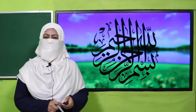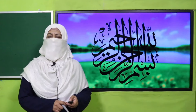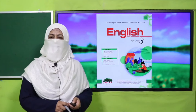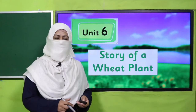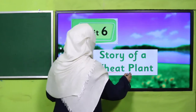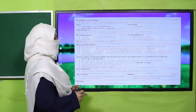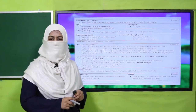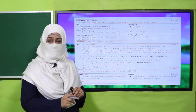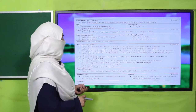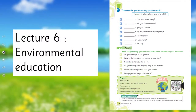Bismillahirrahmanirrahim. Assalamu alaikum, my dear students. How are you? I hope you are enjoying the best of health. I welcome you in my class — English for Grade 3. We are learning Unit 6, its title is 'Story of a Wheat Plant.' My dear fellow teachers, this lesson plan, PowerPoint presentation, and worksheet links are given. You may click, download, and follow it as is or modify for your convenience. Today we are going to learn about environmental education.